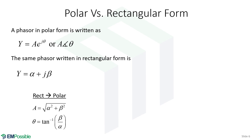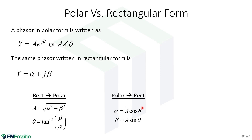If we have our phasor in rectangular form and want to calculate the polar form: the amplitude is simply the square root of alpha squared plus beta squared, and the angle is the inverse tangent of beta over alpha. We could also have the polar form and want the rectangular form: the real part alpha is the amplitude times cosine theta, and the imaginary part beta is the amplitude times sine theta. It's very quick to do this — we can bounce back and forth and work through long complicated equations this way.